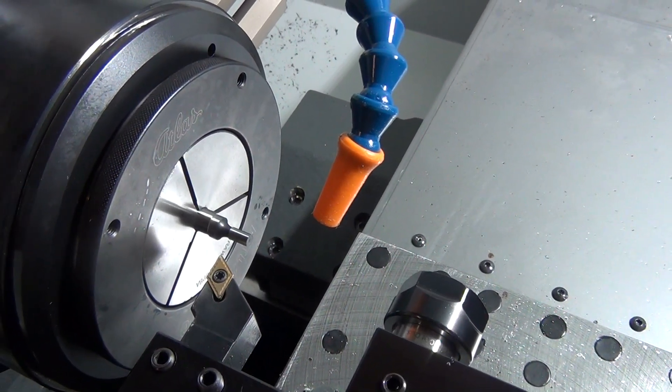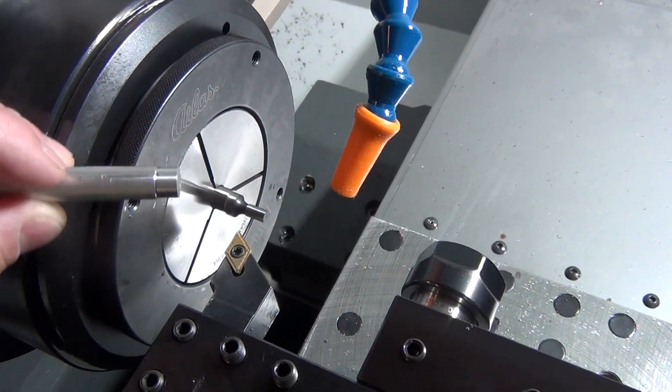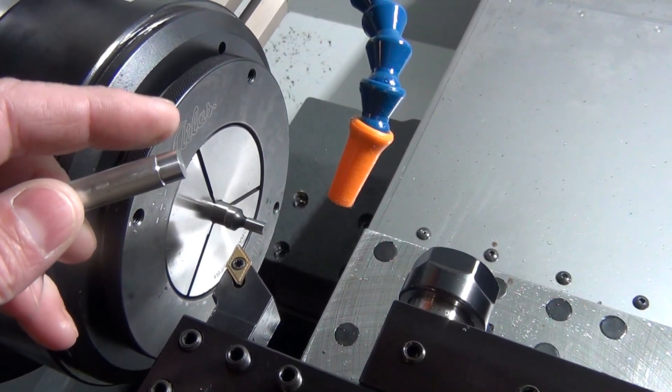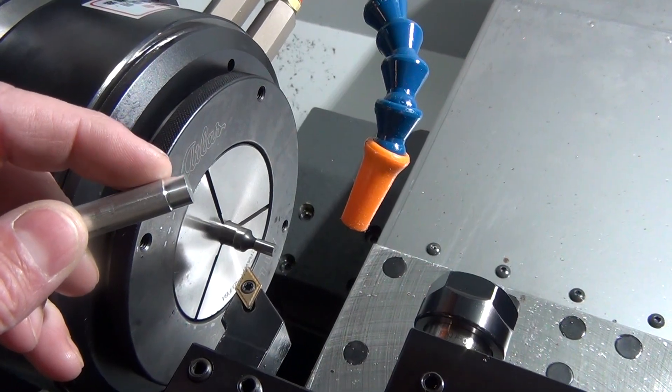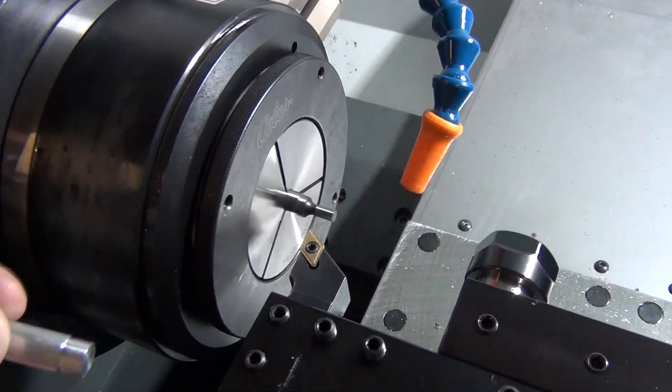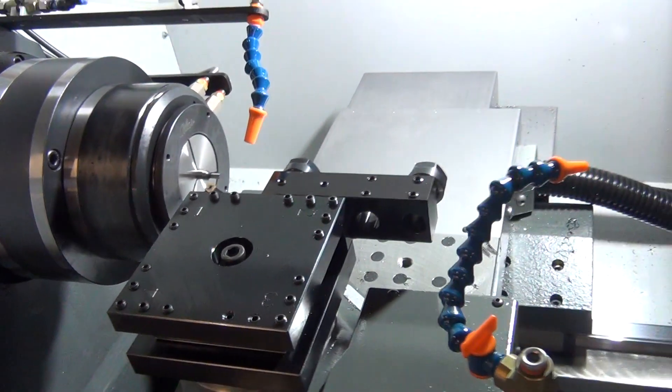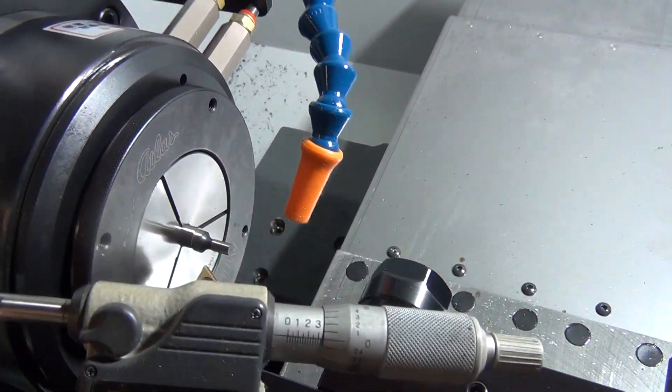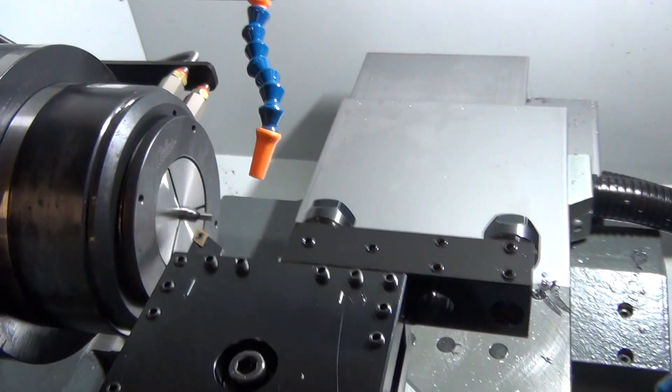I've already calibrated this X offset using the old-fashioned method, which is the most reliable: actually make a cut and then measure with micrometers. So I made a cut, took a measurement of that cut, and programmed that in.